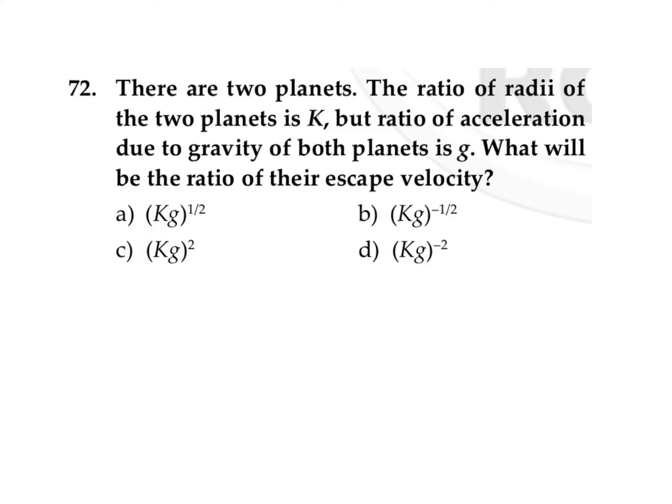In this question, it is given that there are two planets. The ratio of radii of two planets is k, but the ratio of acceleration due to gravity of both the planets is g. What will be the ratio of their escape velocity?